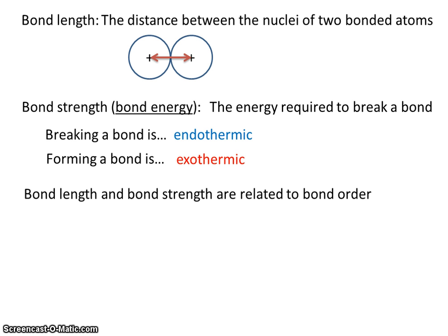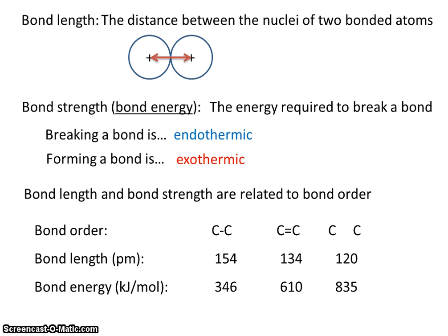Bond length and bond strength are related to bond order. So let's take a look. Bond order, bond length, and bond energy. Let's look at bond order. This is a first order bond, a second order bond, and a third order bond. So single bond, double bond, triple bond.